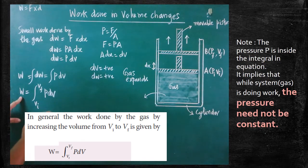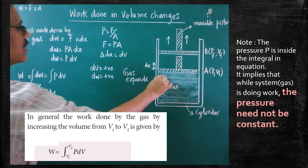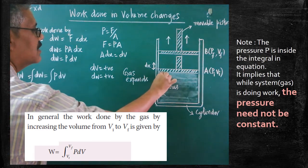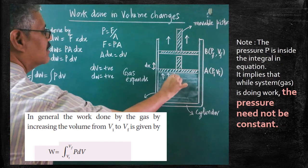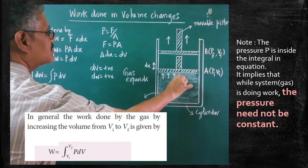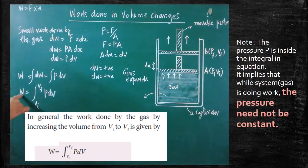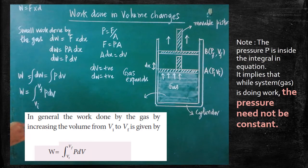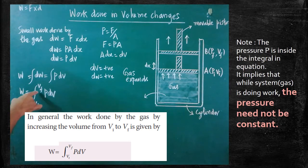That is very important — total work done by the gas on the piston can be calculated because the push is done by the gas. That's why we say work done by the gas on the piston. This is the simplest expression: by knowing the value of pressure and change in volume, we are able to calculate the total work done.